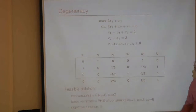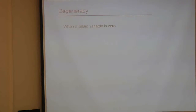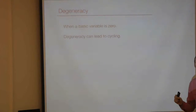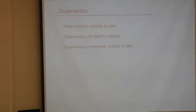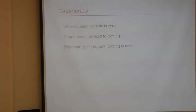To summarize: degeneracy occurs when a basic variable takes zero value in a simplex iteration. These degeneracies can lead to cycling, where for multiple iterations the algorithm returns the same output. In the worst case, cycling never finishes — an infinite loop. However, while degeneracy is frequent in linear programming problems, this infinite cycling is extremely rare in practice.